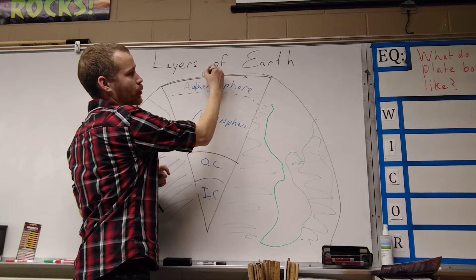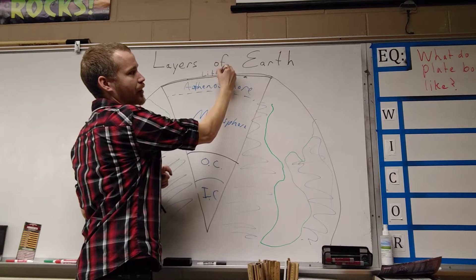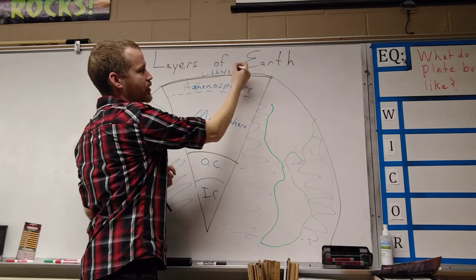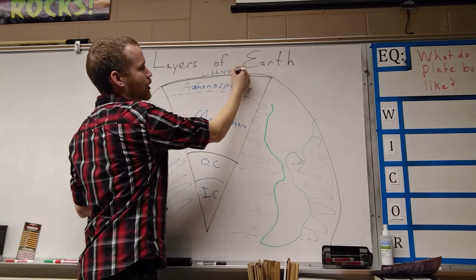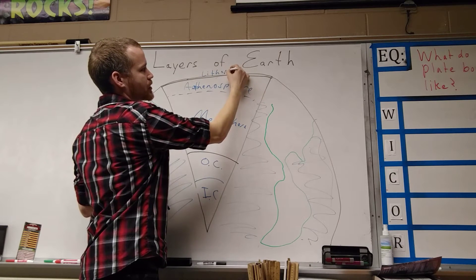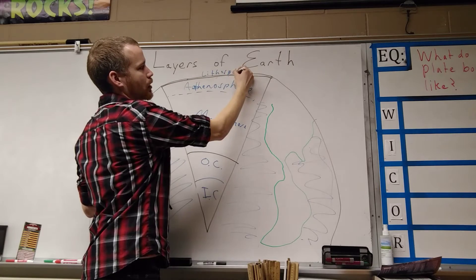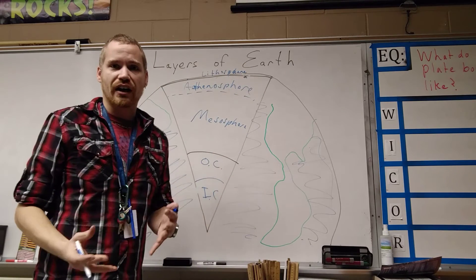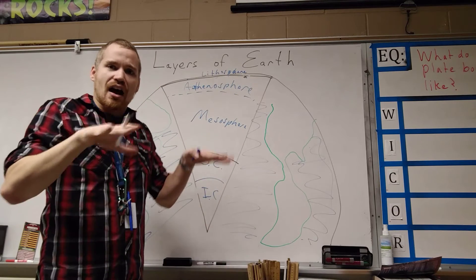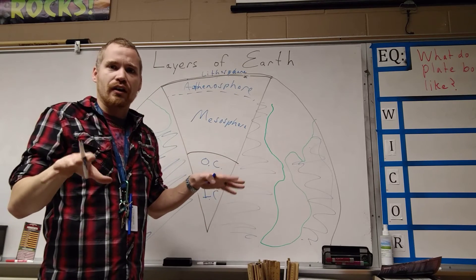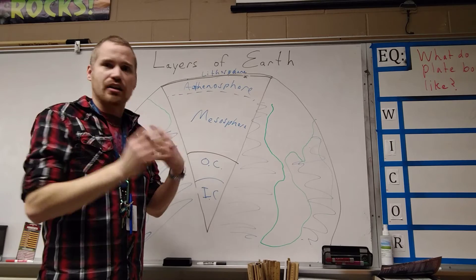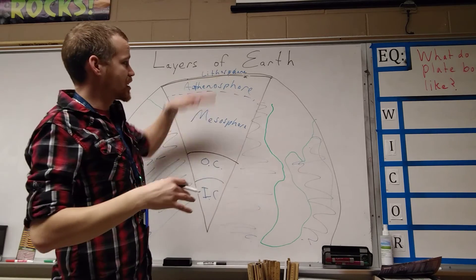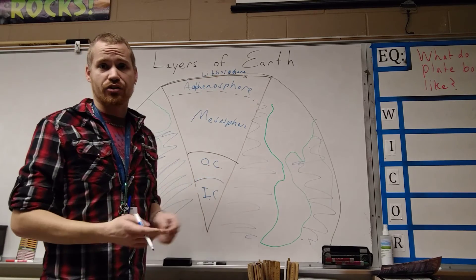And then on top we have our lithosphere, which is a solid, rigid layer — it's the top part of the earth. It's going to break before it bends, and it floats on top of the asthenosphere.